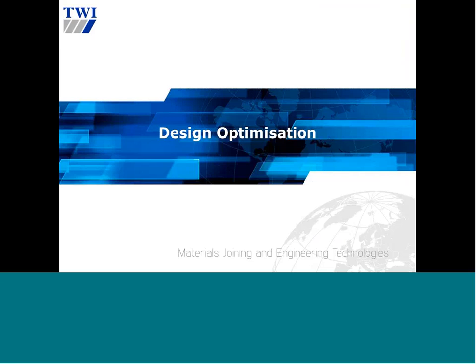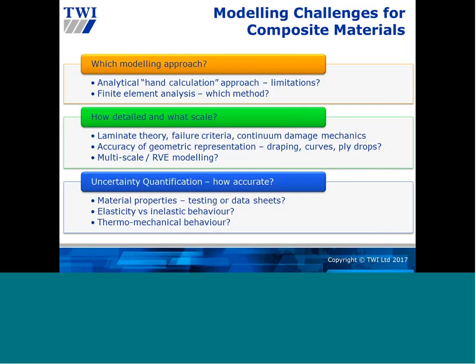The first part of the presentation is about design optimization, focusing on how we can redesign metallic components with composite materials. But before you can do that, you have to understand the challenges with composites. Compared to metals, there are a lot more complications when analyzing the behavior and mechanics of composites. We can go down the hand-calculation approach, setting up equations based on laminate theory in Excel, but there will be limitations in terms of stress accuracy and predictions. We can use finite element analysis, but there are any number of different approaches — from shell-based theory to solid theory, modeling each layer individually, and how accurately we represent things.